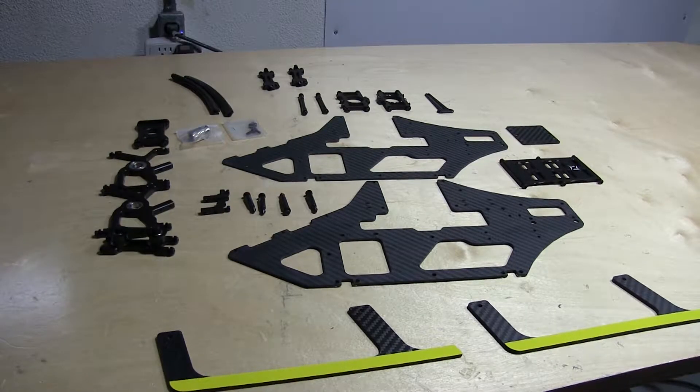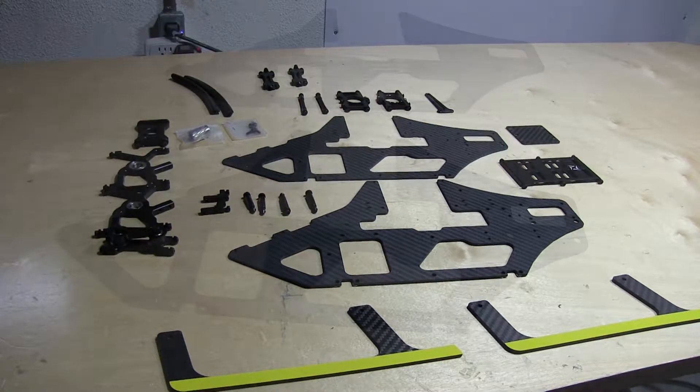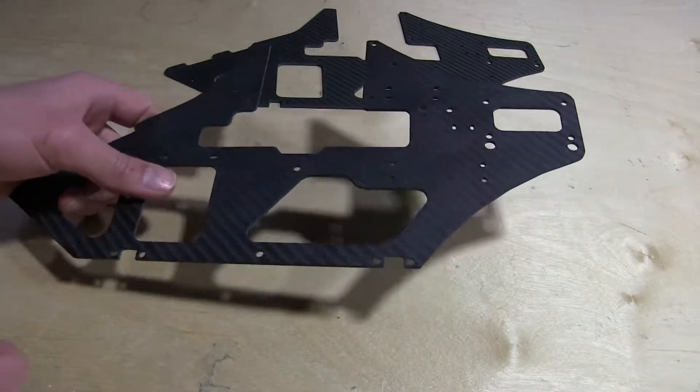Hey guys, welcome to the second video of the Fusion 480 build series. In this video we'll be assembling the mainframe. As you can see, I have everything from the bags as well as the mainframes laid out on the table, so let's get right into it.